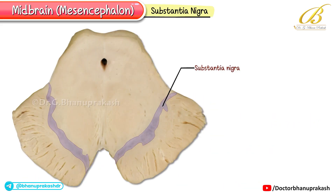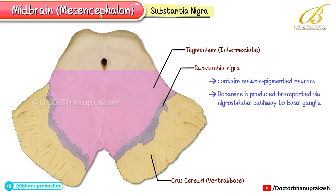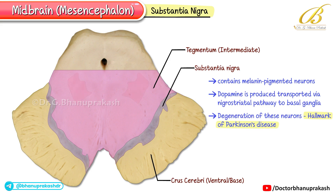The substantia nigra, positioned between the crus cerebrae and the tegmentum, contains melanin-pigmented neurons. Dopamine produced here is transported via the nigrostriatal pathway to the basal ganglia. Degeneration of these neurons is a hallmark of Parkinson's disease. Throughout the midbrain, you'll also find the reticular formation, which extends along the entire brainstem.